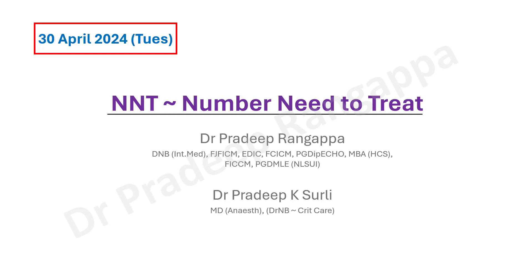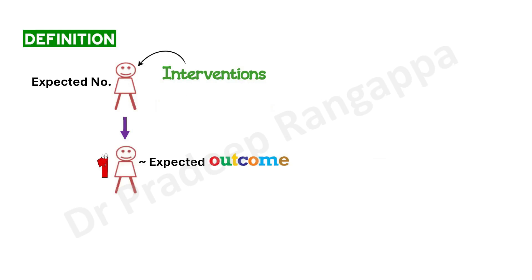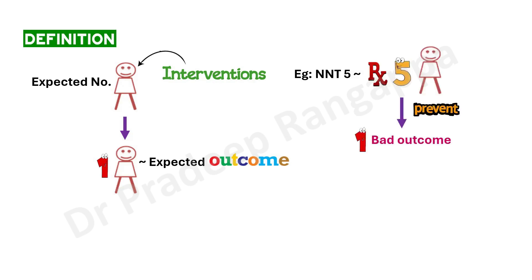The definition of NNT is: the expected number of patients that need to be treated to get one patient with a desired outcome. For example, if NNT is five, it means you need to treat five patients to prevent one bad outcome. NNT is a comparative measure of effect, and it varies for different contexts and risk groups.